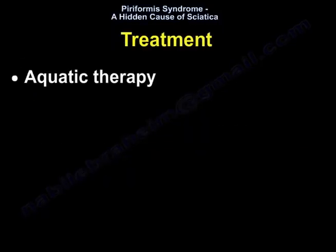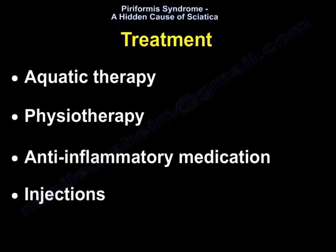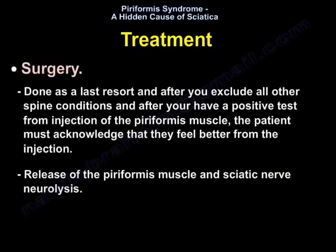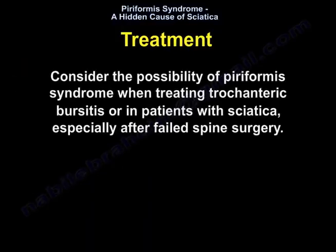Treatment includes aquatic therapy, physiotherapy, anti-inflammatory medications, and injections. When performing the injection — whether under ultrasound or fluoroscopy — make sure the patient has someone to drive them home, because the sciatic nerve may become affected by the numbing medicine. Surgery is done as a last resort and after excluding all other possible spine conditions. The patient must have a positive response to piriformis injection and acknowledge feeling better from it. Surgical options include release of the piriformis muscle and sciatic nerve neurolysis. Consider the possibility of piriformis syndrome when treating trochanteric bursitis or in patients with sciatica, especially after failed spine surgery.